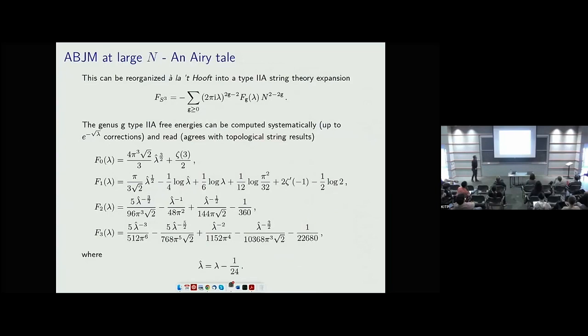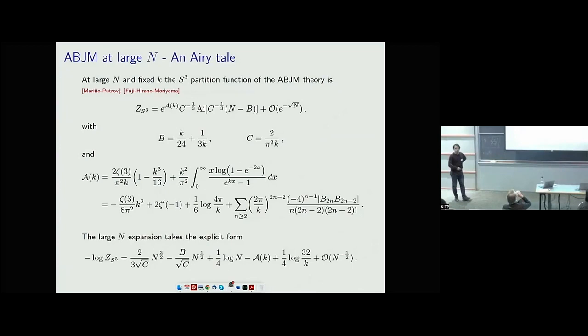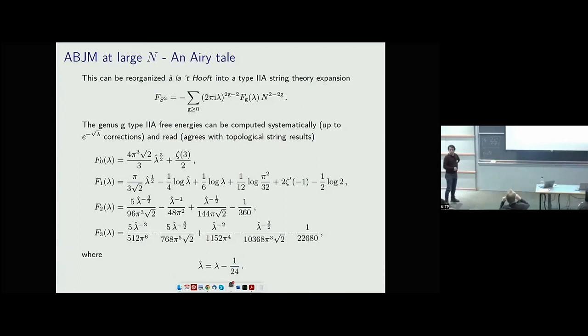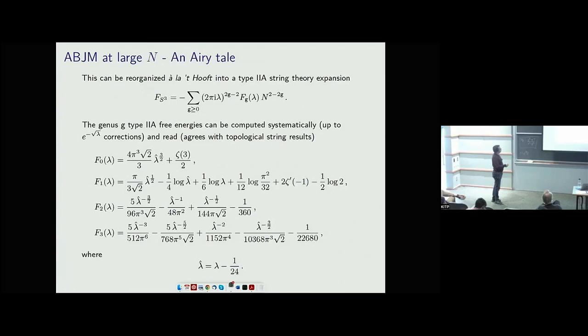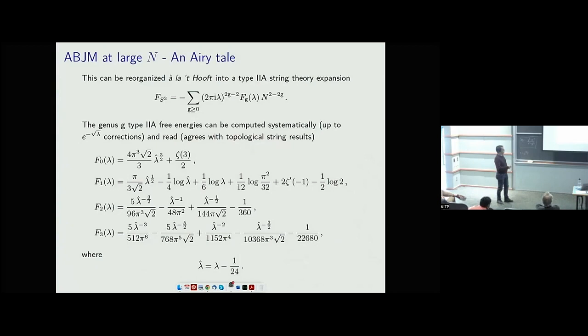You can also take this large-N expansion and reorganize it in the type IIA limit, finding explicit expressions for the string theory free energy. The answers here are genus zero, one, two, three worldsheet genera — they should be type IIA free energies. A curious feature is that lambda gets shifted in such a way that these can be resummed exactly up to e^{-√λ} corrections.